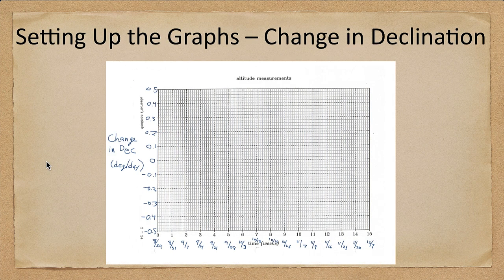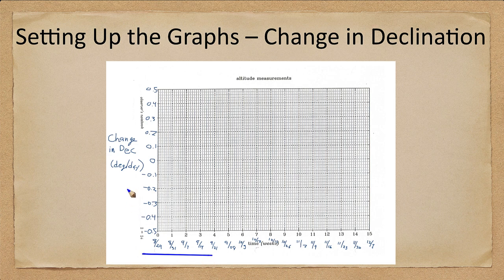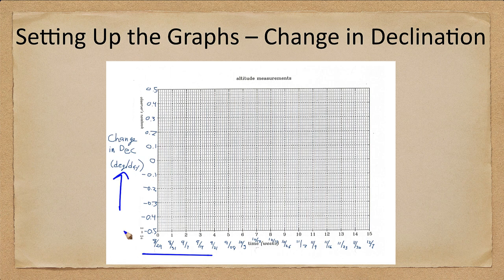Let's look at the change in declination graph. You'll note that the date scale is exactly the same as it was for the previous one. The change in declination is in degrees per day, and it starts at negative 0.5 down at the axis at the bottom, and then goes up by a tenth for each major division and will end at plus 0.5 up at the top. So that will set up the scales of the graphs.